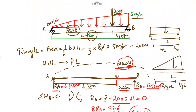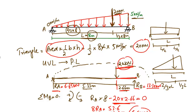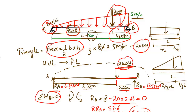This is the method to find support reactions for a simply supported beam with a triangular load. First, find the area of the load and convert it to an equivalent point load. Then find the centroid location for each load. Next, take moments at any support and find the reaction force. Finally, use the vertical equilibrium equation — summation of vertical forces = 0 — to find the remaining reaction. Hope you guys understood. Don't forget to subscribe to our channel. Thank you for watching.